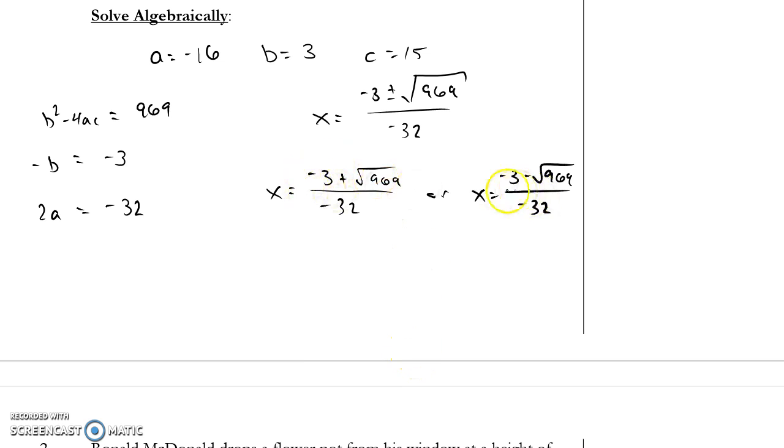And when I put that into my calculator, I get two solutions. One of them being X equals negative 0.88, and the other being X equals 1.07. Notice this matches what we got with graphing. This doesn't.